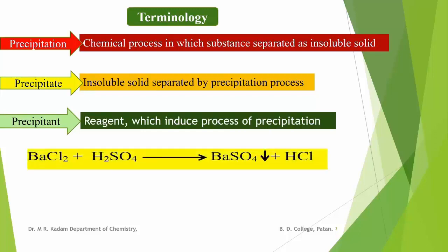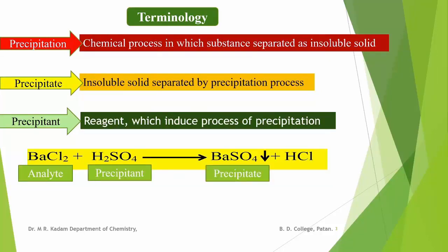To understand these terms, we consider the reaction between barium chloride and H2SO4, which gives barium sulfate precipitate. In this reaction, BaCl2 is the analyte, H2SO4 is the precipitant, and barium sulfate is the precipitate, and the transformation of Ba into barium sulfate is the precipitation process.